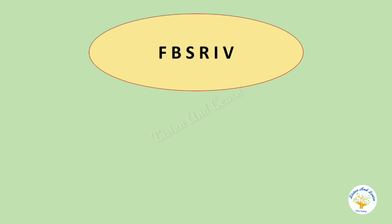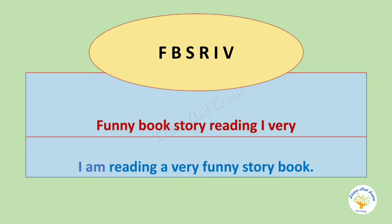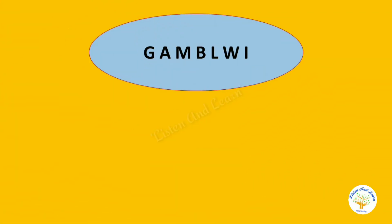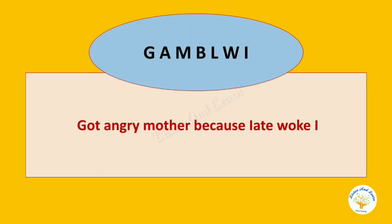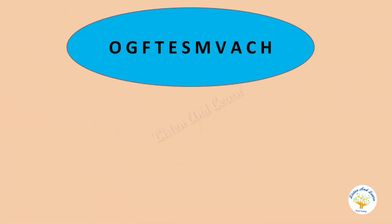Words with letters F, B, S, R, I, V — words beginning with these letters: funny, book, story, reading, I, very. Rearrange these words to make a meaningful sentence: 'I am reading a very funny story book.' Then letters G, A, M, B, L, W, I — words: got, angry, mother, because, late, woke, I. Frame a sentence: 'Mother got angry because I woke up late.'